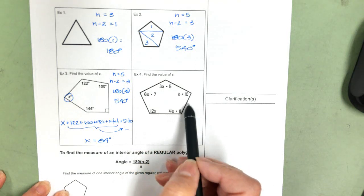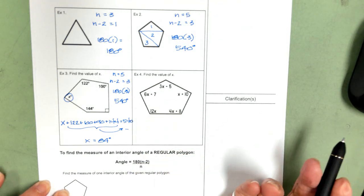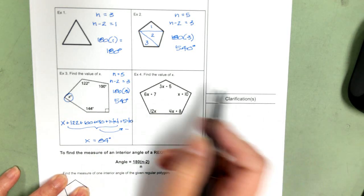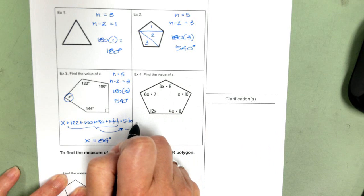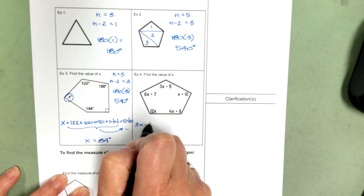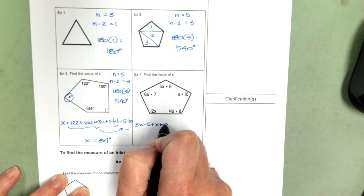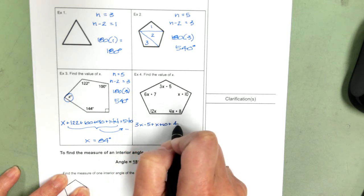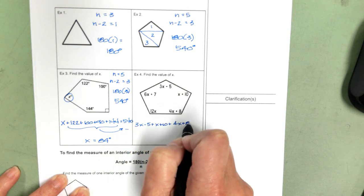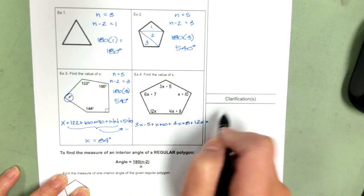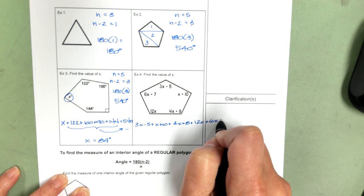Same thing here, one, two, three, four, five. So we know it's going to add up to 540. So we just pick a vertex to start at. I'm going to start up here. 3x minus 5, plus x plus 10, plus 4x plus 8, plus 12x. I'm going to move over to this side of my paper. 6x plus 7. That's going to equal 540.